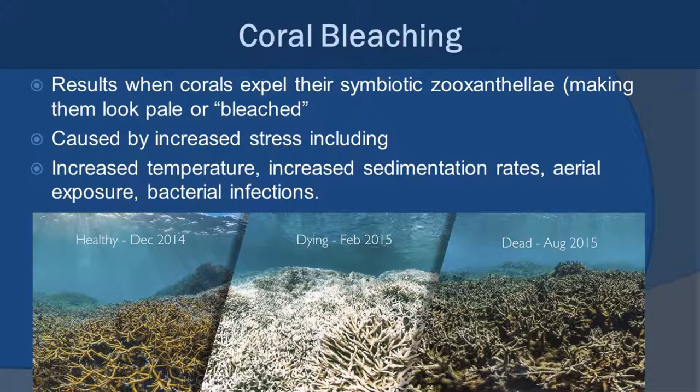What causes bleaching? There are a number of reasons: increased temperature, increased sedimentation rates where light can't reach the coral, aerial exposure, and bacterial infections. The image on the bottom shows a healthy reef on the left and then the progression of bleaching, and after the coral dies completely, algae growing over it. Unfortunately, once bleaching occurs, unless zooxanthellae are able to recolonize and conditions return to normal, it weakens the coral, makes it more brittle, decreases the calcification rate, and a lot of times these corals end up dying.